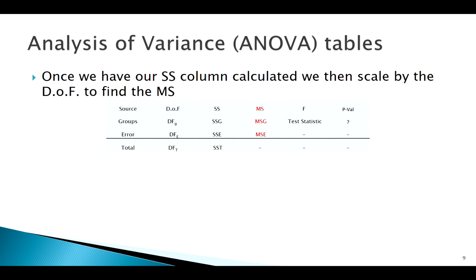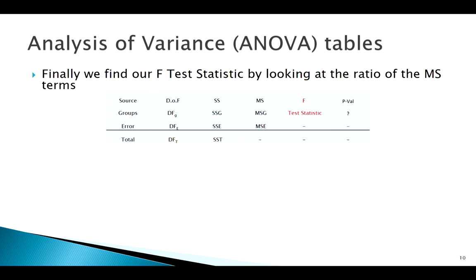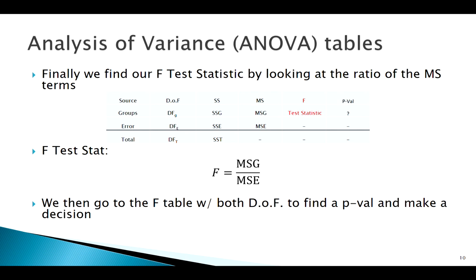For mean squares: mean squared groups equals sum of squared groups divided by degrees of freedom for groups. Mean squared error equals sum of squared error divided by degrees of freedom for error. Our test statistic is then the ratio of mean squared groups to mean squared error — essentially comparing the dispersion of the sample means to the dispersion within each of the samples.